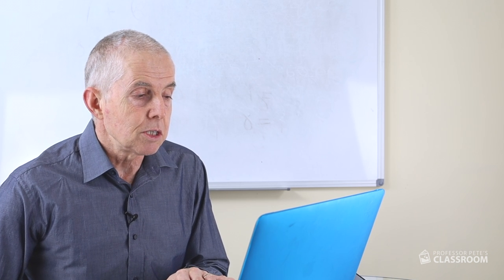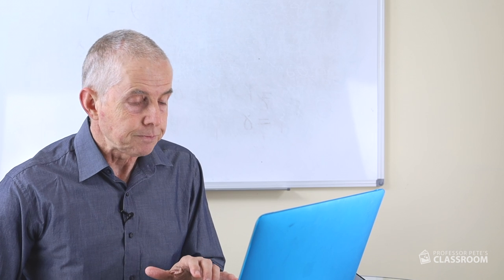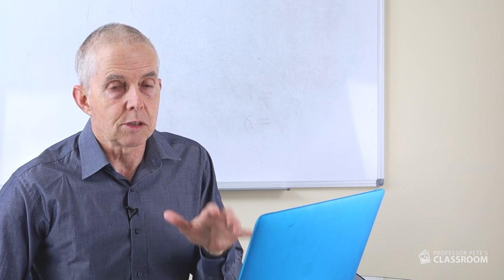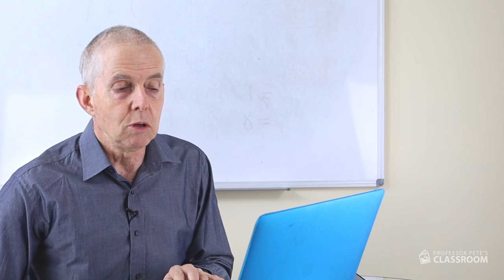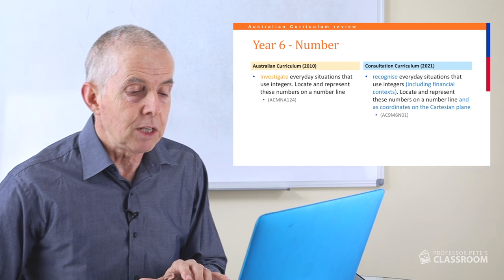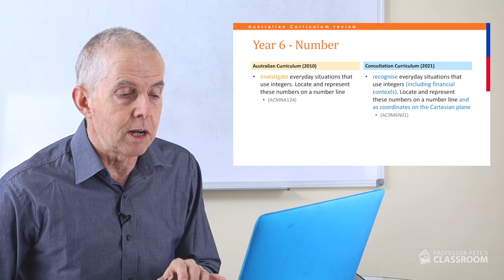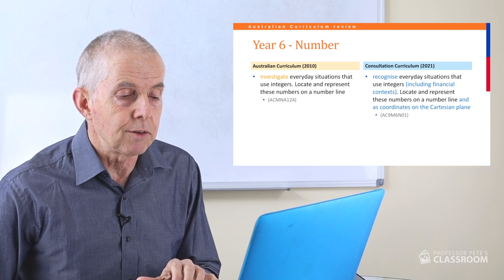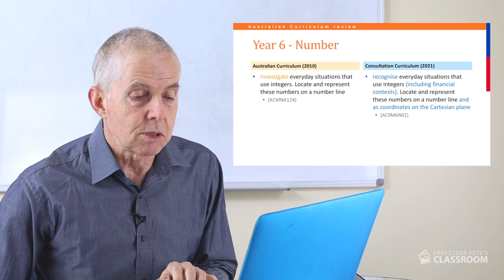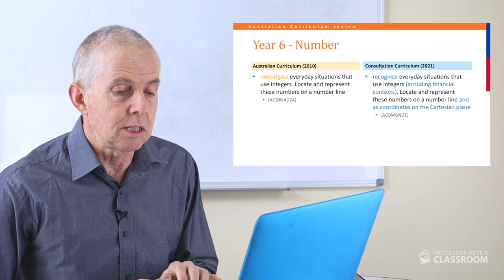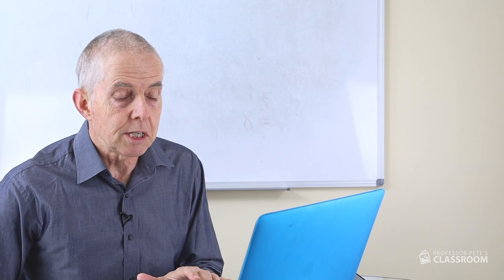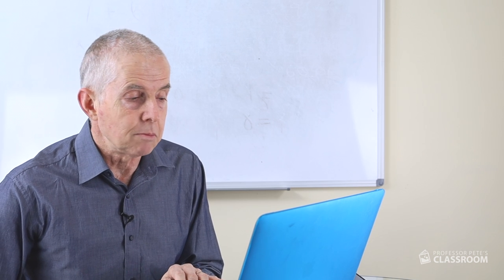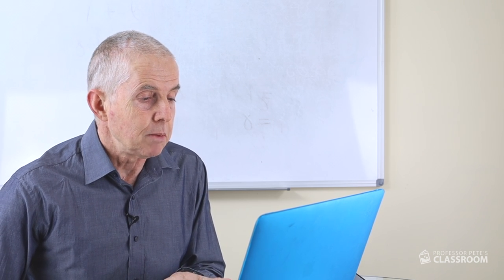I'm going to go through the content descriptors one by one in the order in which they're presented, focusing on the new one rather than the old one. The first content descriptor for number for year six, labelled 6N01, states: recognise everyday situations that use integers including financial contexts; locate and represent these numbers on a number line and as coordinates on the Cartesian plane. The financial context and coordinates on the Cartesian plane have been added.